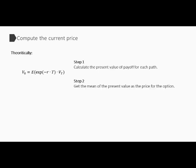For all four options, the final step before getting the price is to calculate the average present value. Theoretically, we use a two-step formula. Step one: calculate the present value of payoff for each path. Step two: get the mean of the present values as the price for the option. The programming code is as simple as shown. This concludes the part about the four kinds of exotic options. Let's move to the final part.